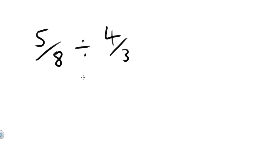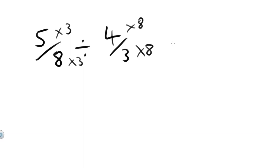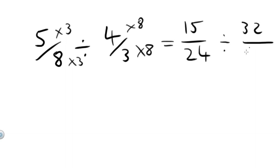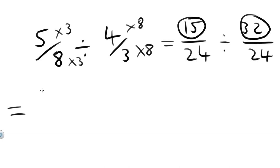And just one more using the alternative method, this time the third question: 5 eighths divided by 4 thirds. Again, the goal is to get the same denominator. Because it's a bit hard to work out the common denominator here, we just multiply by the opposite denominator. So 5 eighths will multiply by 3, top and bottom. And 4 thirds will multiply by the other denominator, which is 8, top and bottom. 5 times 3 is 15, over 8 times 3 is 24, divided by 4 times 8 is 32 over 3 times 8 is 24. Again, all we have to do is rewrite the fraction using just the numerators: 15 over 32. And that's our answer.